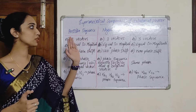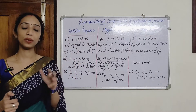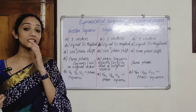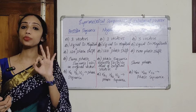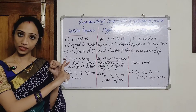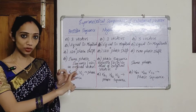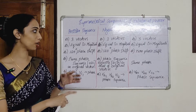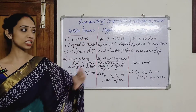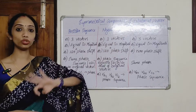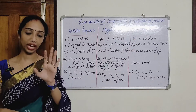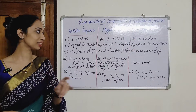If you have a symmetrical component of an unbalanced phase, we will resolve it. There is a symmetrical component: positive sequence, negative sequence, and zero sequence. There are three vectors in positive sequence, three vectors in negative sequence, and in zero sequence we also have three vectors.